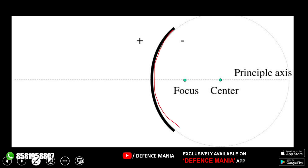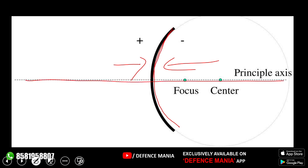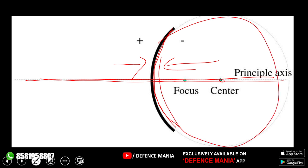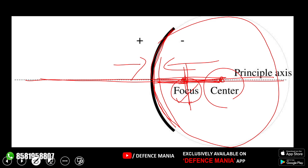Let's understand the basic optics terminology. If we look at a mirror from one side, it becomes convex; from the other side, it becomes concave — it depends on which surface is showing the reflection. The principal axis passes through the midpoint of the mirror. Any circle has a center point; the distance from the center to the arc of the mirror, divided by two, gives us the focal point — which we call the focus. Focus and center are both very important here.